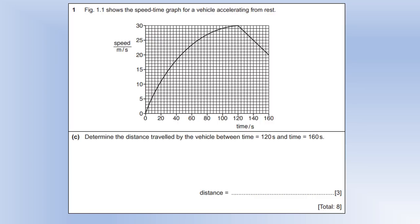So the diagram shows a speed time graph for a vehicle accelerating from rest. Determine the distance traveled by the vehicle between 120 seconds and 160 seconds. So distance traveled is the area under the graph. So the area that we want is the one I've highlighted in red.